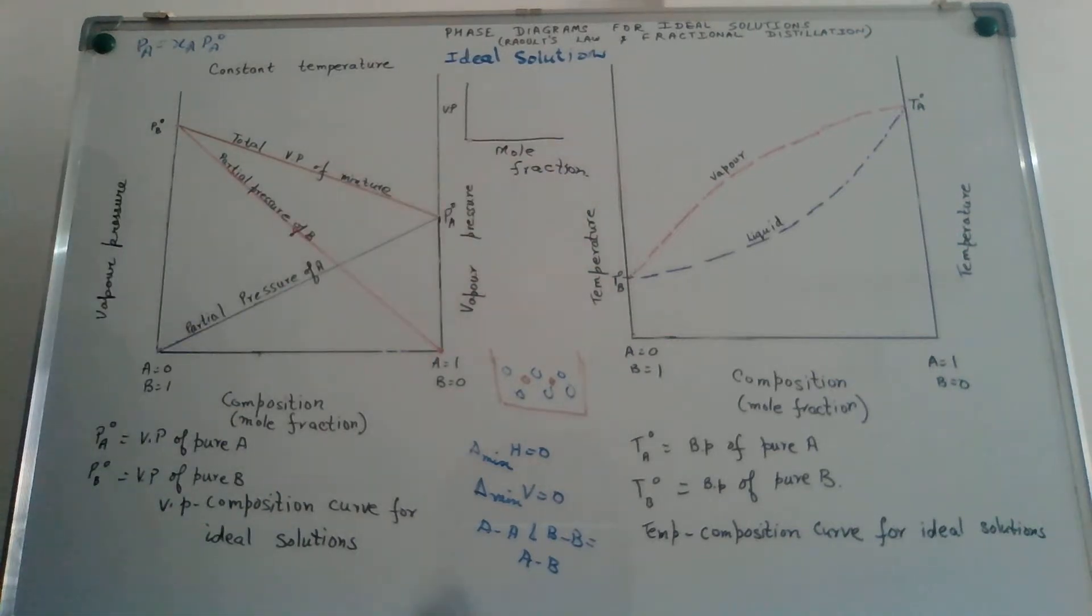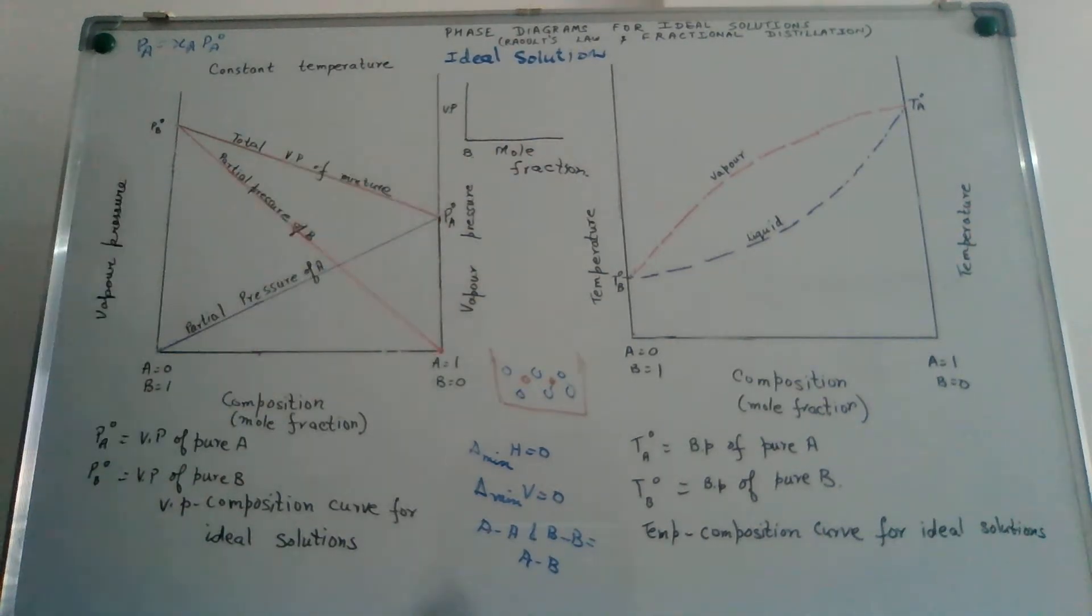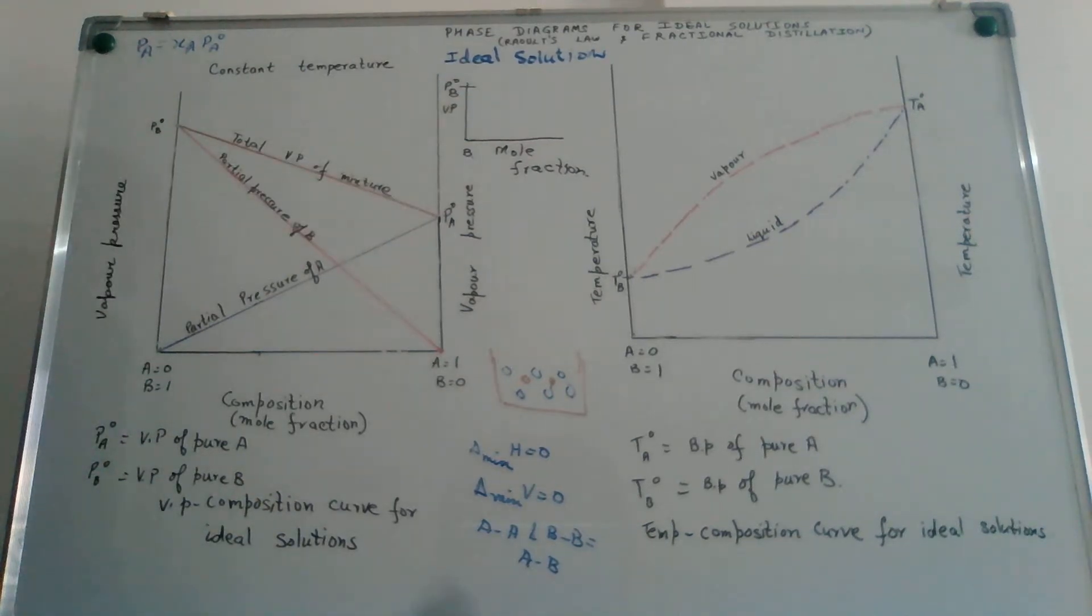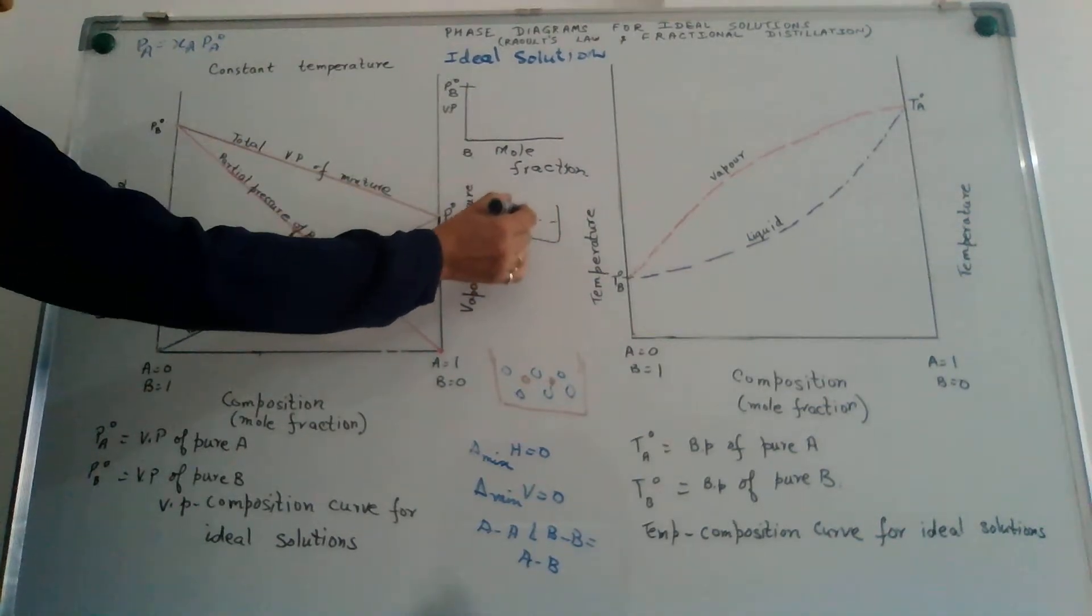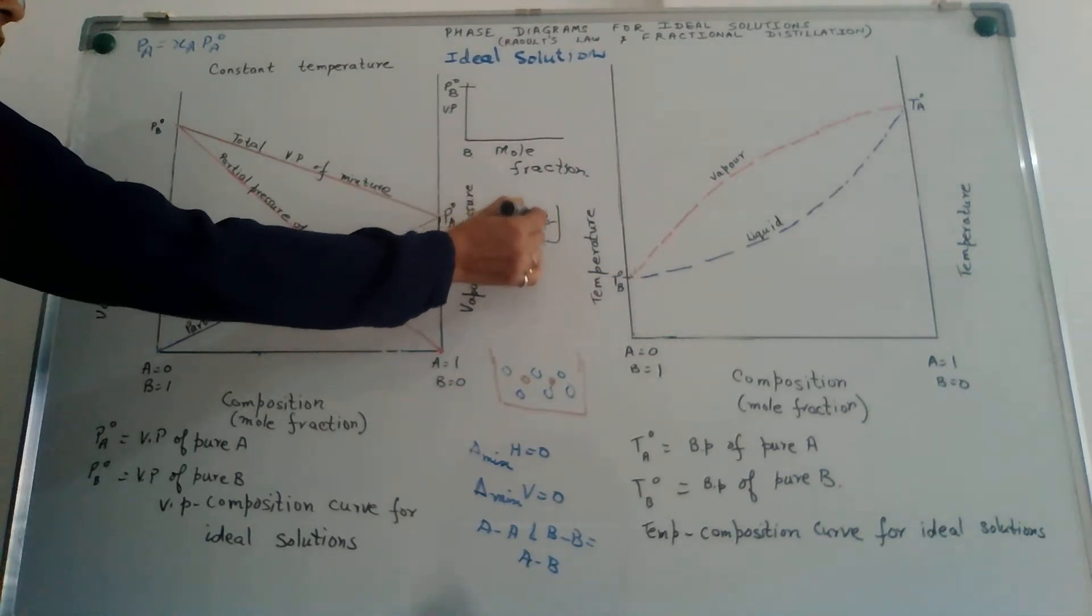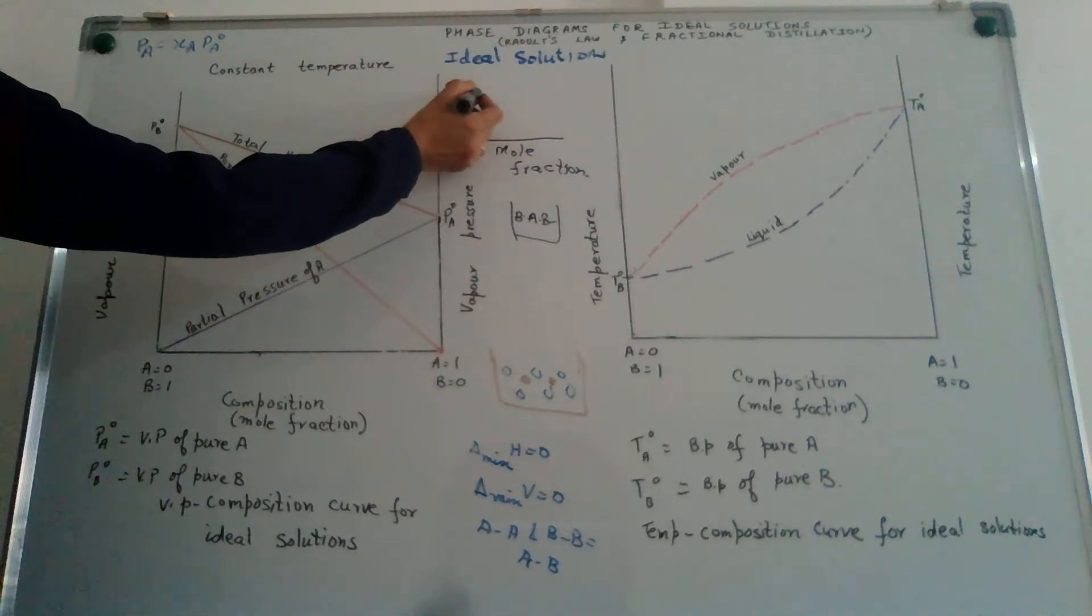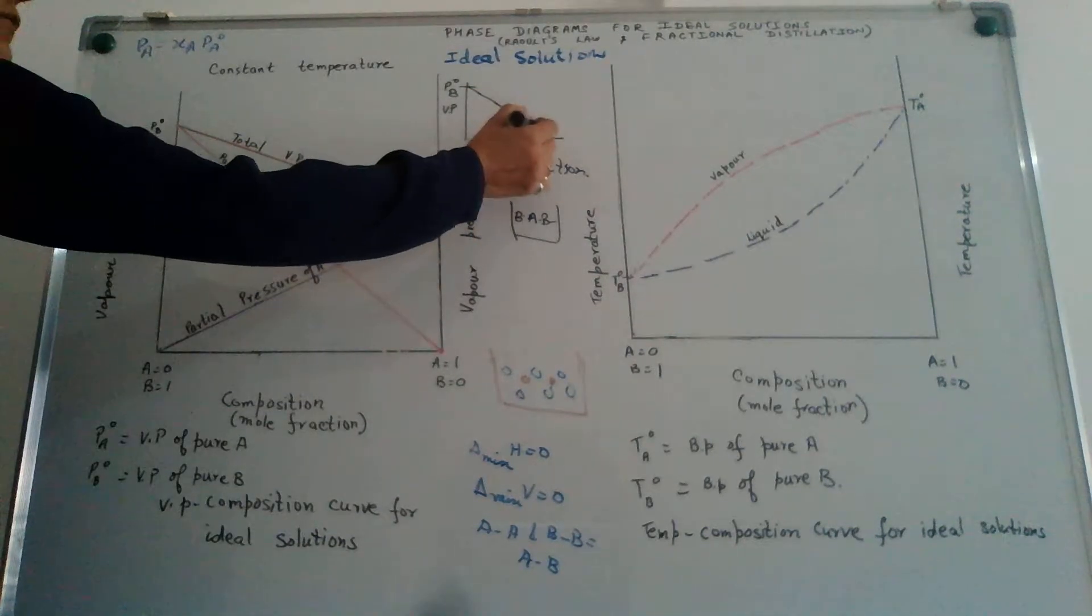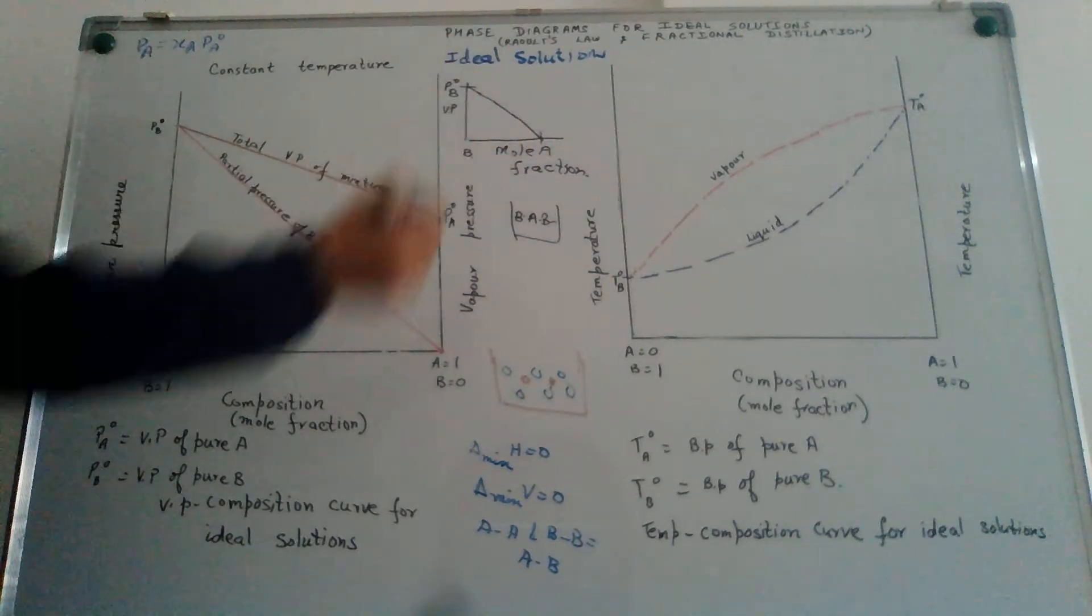We have vapor pressure on the y-axis and mole fraction on the x-axis. When we have only B in the solution, there is a certain value to that vapor pressure called PB0, the vapor pressure of pure B. If now I add A to the liquid B, on the surface there are not just particles of B, there will now be particles of A as well. In other words, the vapor pressure of B will decrease. Further addition of A means further decrease in the vapor pressure of B. If I have only A in the liquid mixture, the vapor pressure of B is zero.